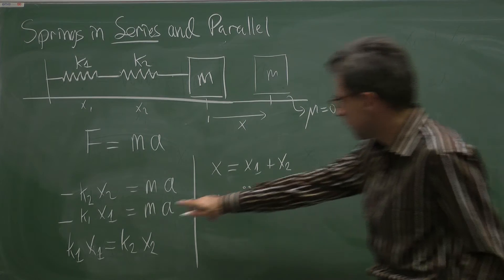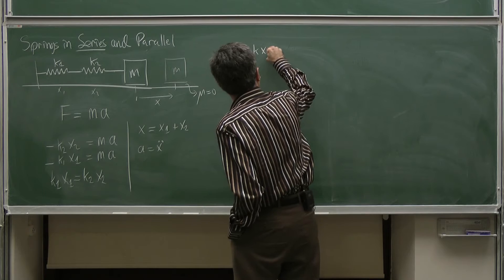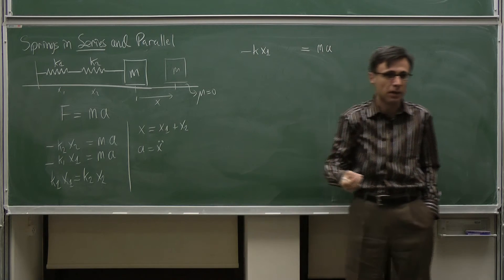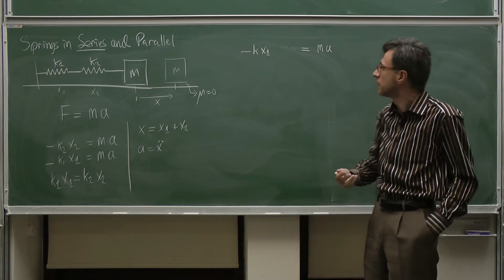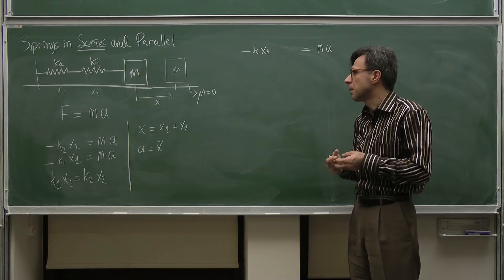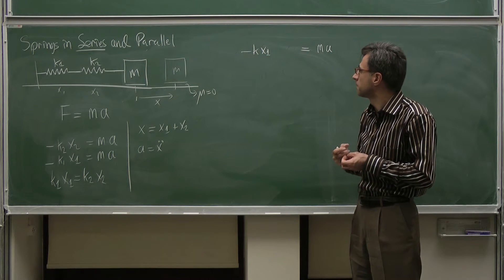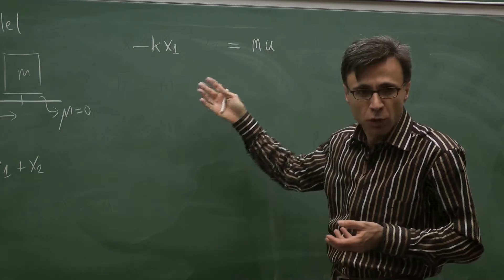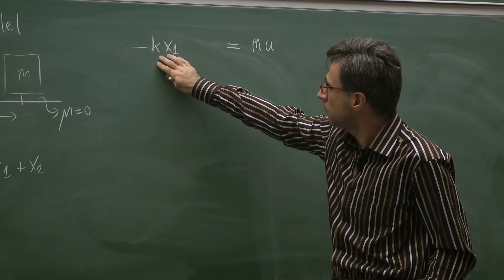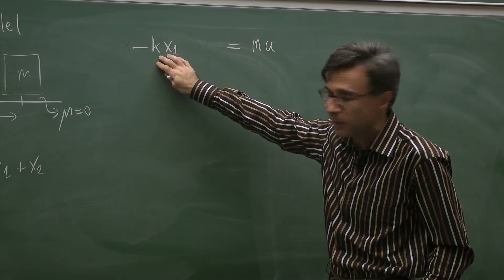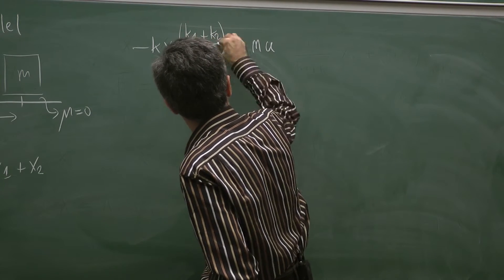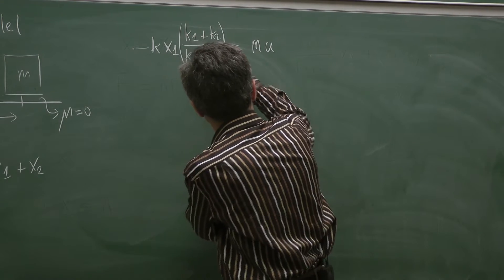Let's start with the equation: negative k1 x1 equals m times a. I would like to find the frequency of oscillation of this system. I expect that the whole system can be expressed by a single effective spring of some kind. To solve this algebra, one of the usual tricks is multiplying the left-hand side by unity, choosing that unity carefully. One choice is (k1 plus k2) divided by (k1 plus k2).